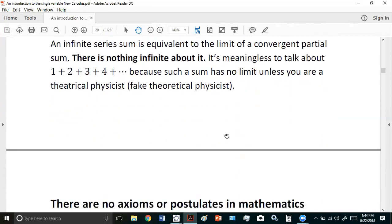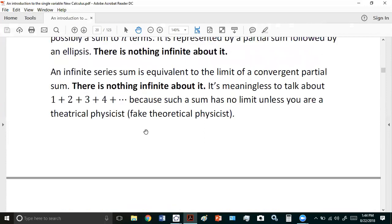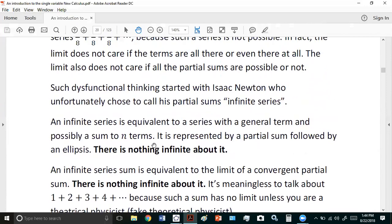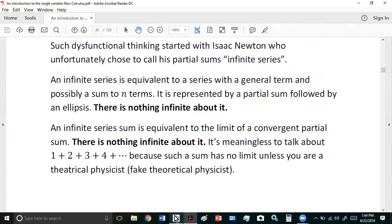An infinite series is equivalent to a series with a general term and possibly a sum to n terms. So it's just represented by a partial sum followed by an ellipsis. There's nothing infinite about it. And it's unfortunate that Isaac Newton chose to call his partial sum series an infinite series. There's nothing infinite about it. And the limit doesn't care if the terms are all there or even there at all.